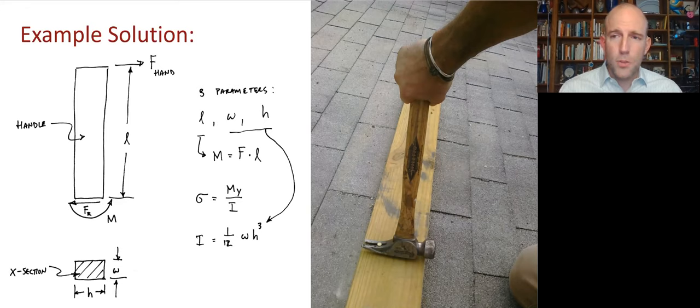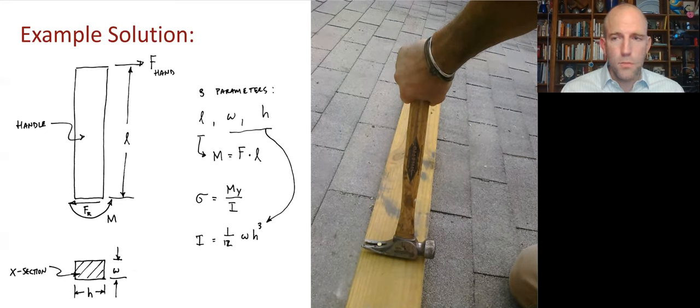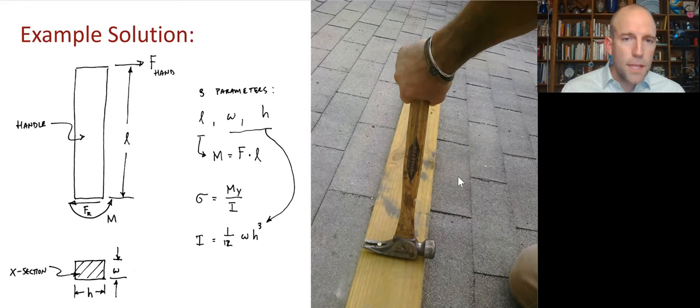So we'll need to have a cut somewhere. And in this case, we've cut the handle just above the head of the hammer. And we've approximated the handle simply, it's very complicated geometry, but we've approximated it as a rectangular prismatic member.